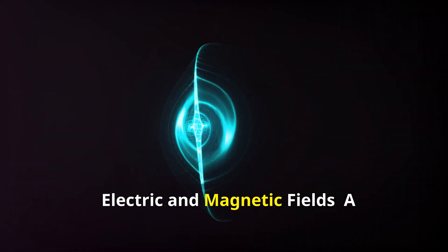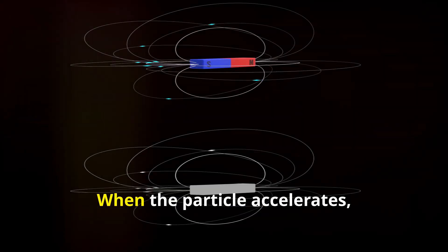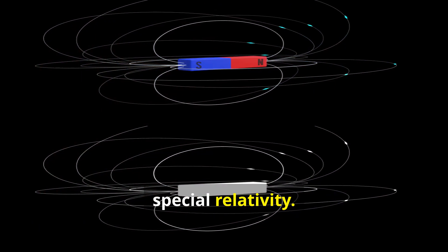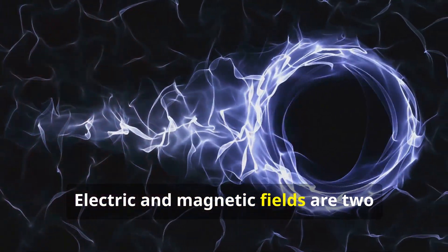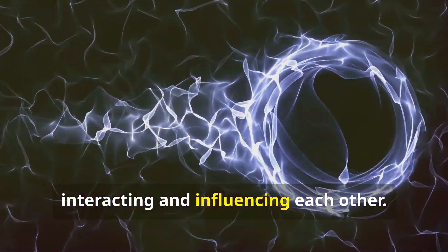A motionless charged particle generates a static electric field. When the particle accelerates, a magnetic field forms around it due to special relativity. Electric and magnetic fields are two components of the electromagnetic field, interacting and influencing each other.